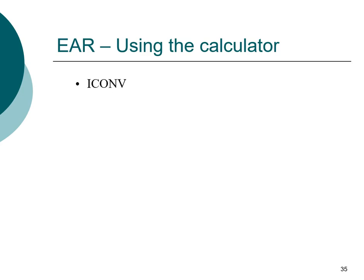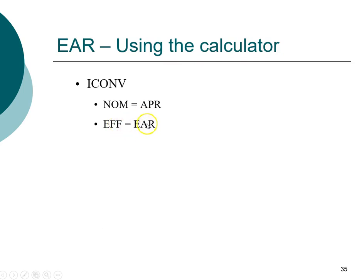In addition to the formula, you can use the financial calculator to convert between effective annual rate and annual percentage rate using the ICONV function. The calculator uses different abbreviations: NOM stands for nominal rate, which is equivalent to APR; EFF stands for effective rate, the same as EAR; and C/Y stands for compounding periods per year, equivalent to M in the formula. Pause the video and add this to your formula sheet so you don't have to memorize all these conventions. Note that you cannot use the calculator for continuous compounding.